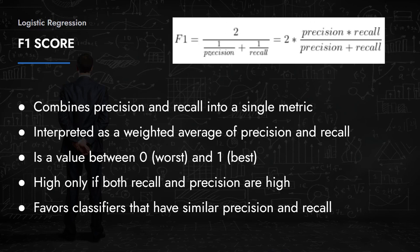The F1 score combines precision and recall into a single metric: F1 = 2 × (precision × recall) / (precision + recall). This aims to give you a single number representing both. In most problems where it's not critical to maximize one over the other, a high F1 score — meaning both precision and recall are high — is generally what you want to aim for.